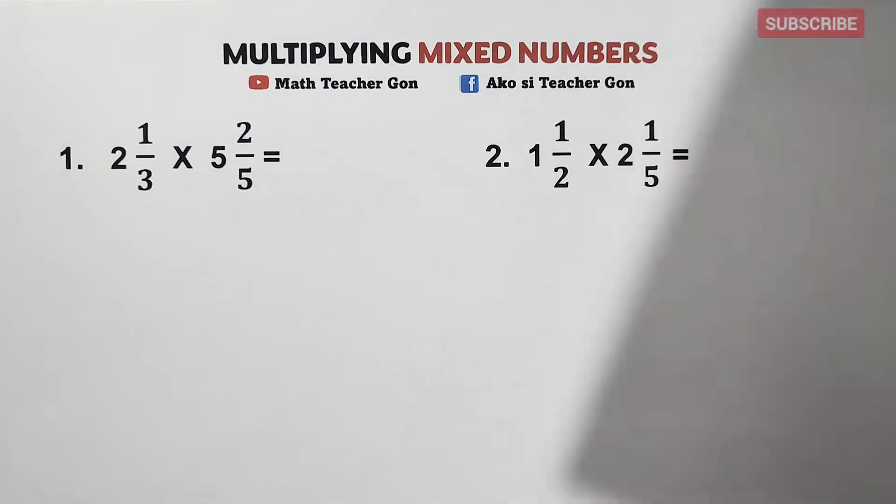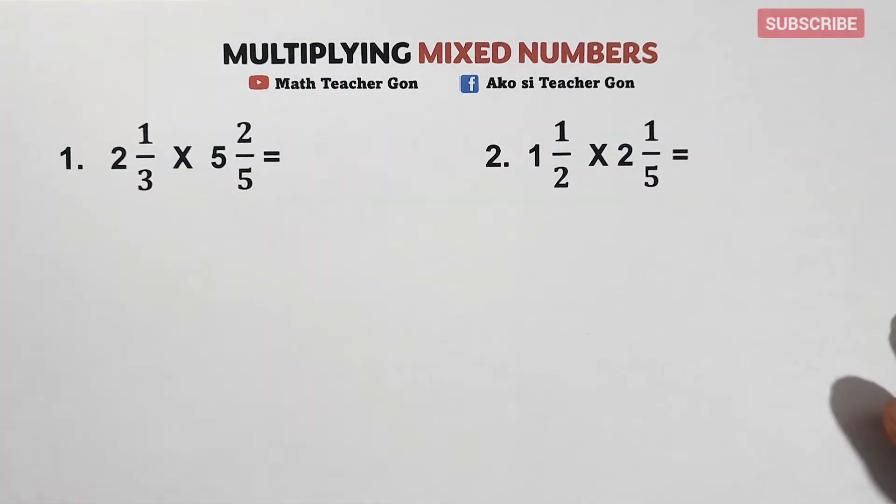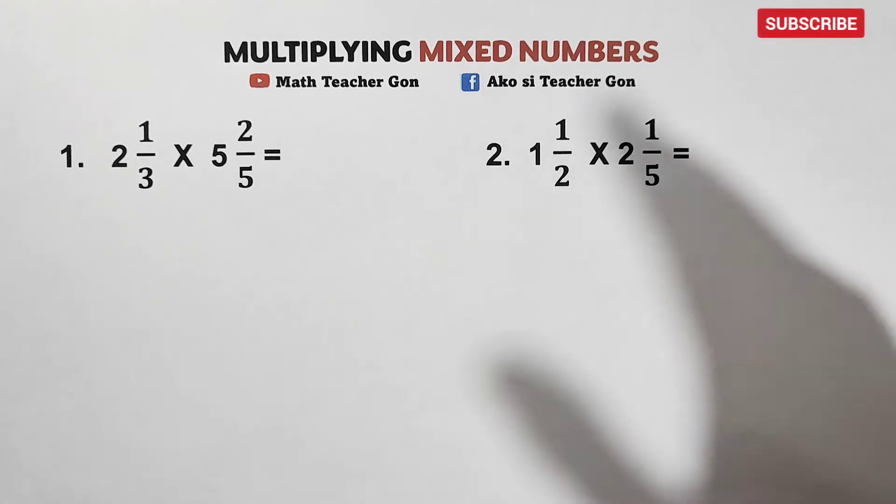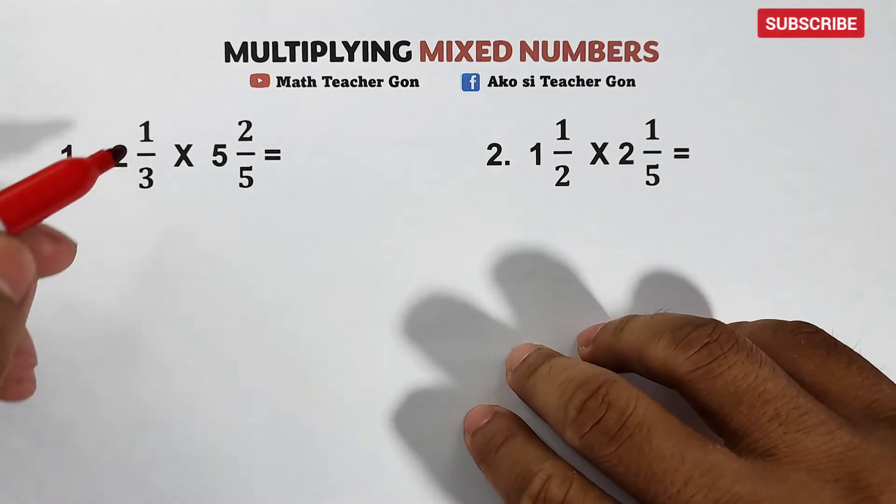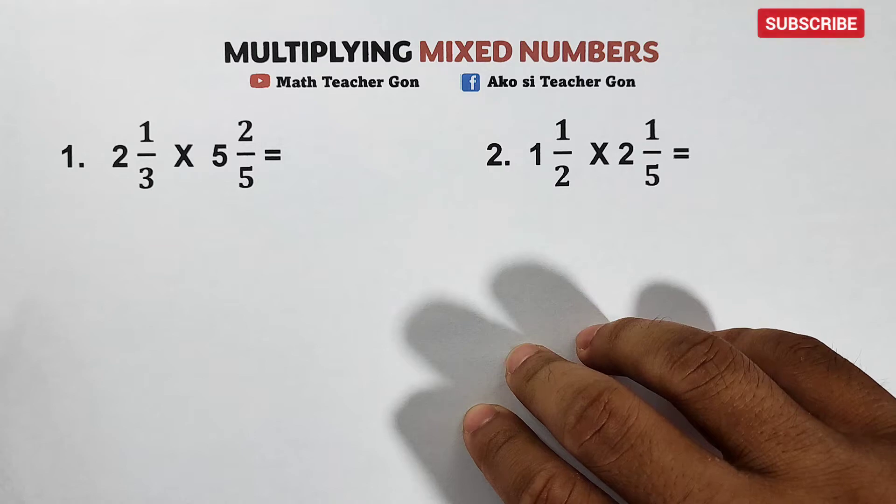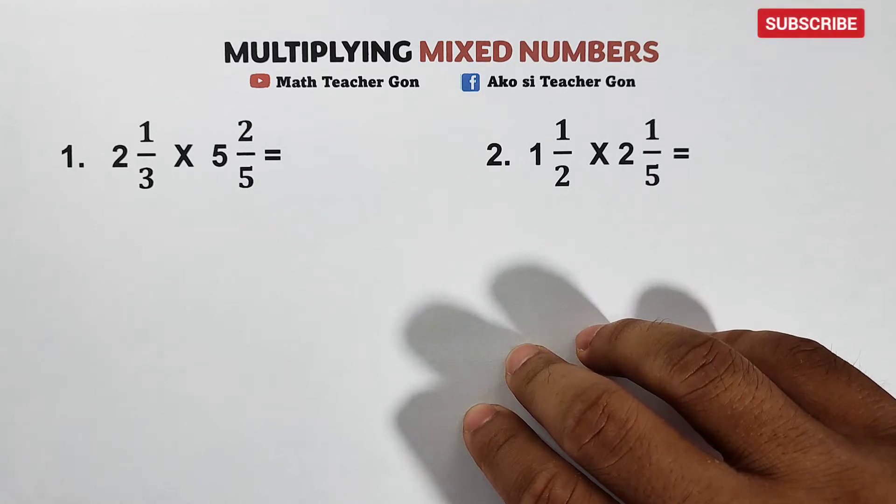What we have here is two different examples for me to show you how to multiply mixed numbers. So how are we going to multiply them? The first step is that you need to convert these mixed numbers into improper fractions. So how do we convert them?